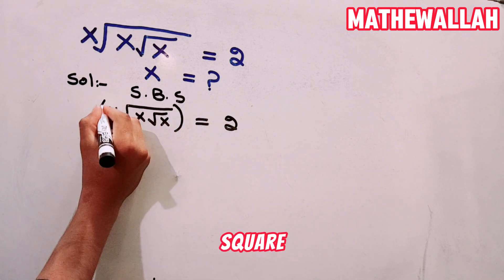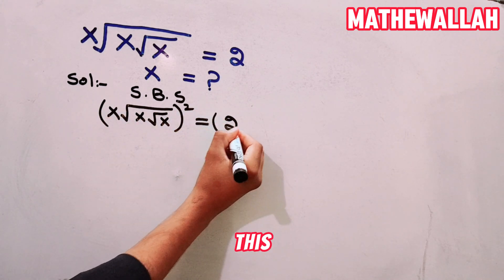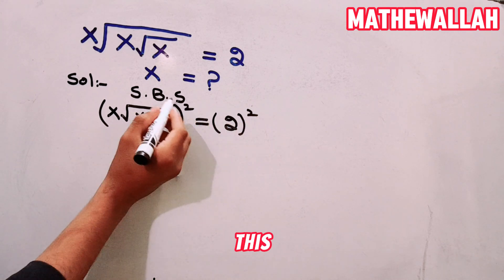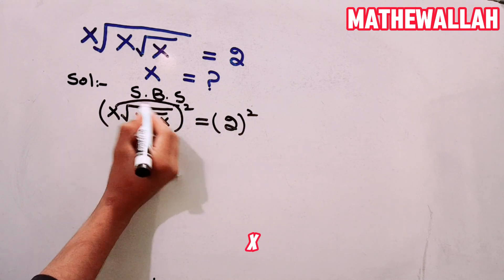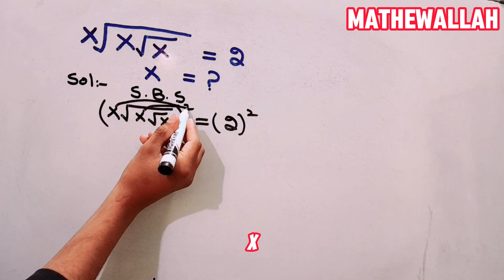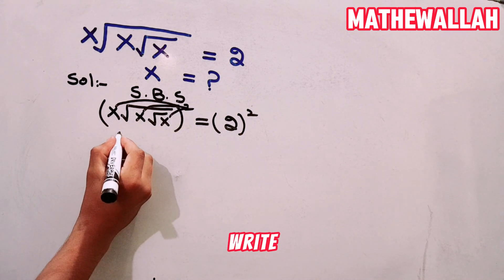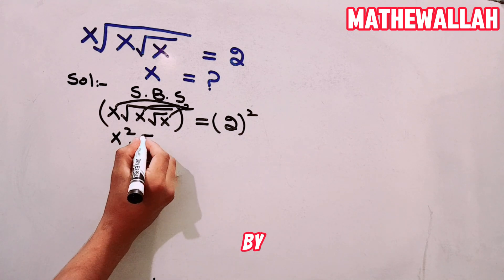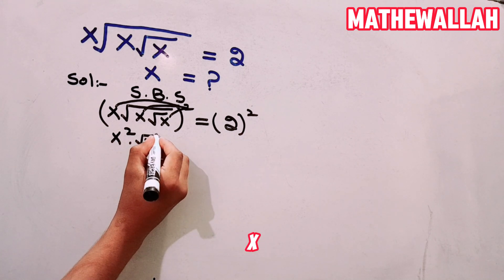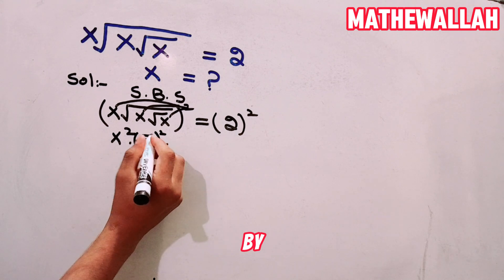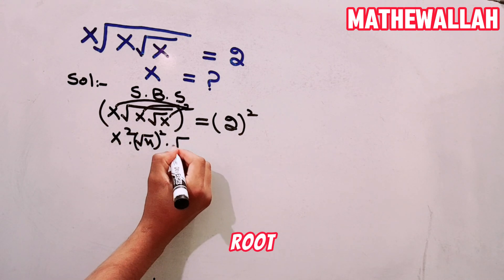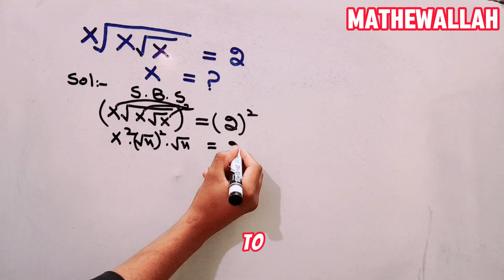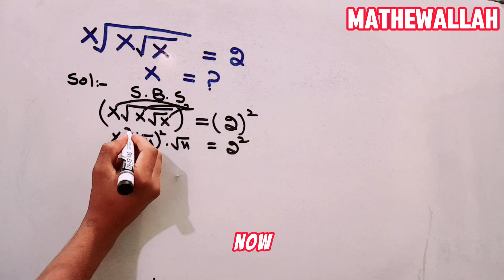We square this side and square this side. Squaring means the square applies to x, and also to this x, and also to this x. So we write x squared, multiply by square root x whole squared, multiply by square root x whole squared, is equal to 2 to the power 2.